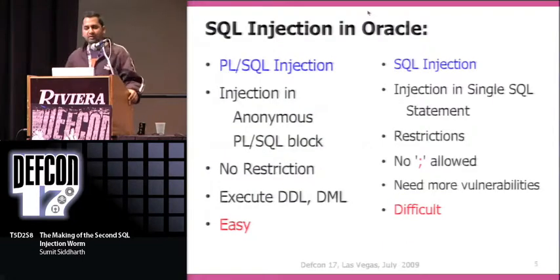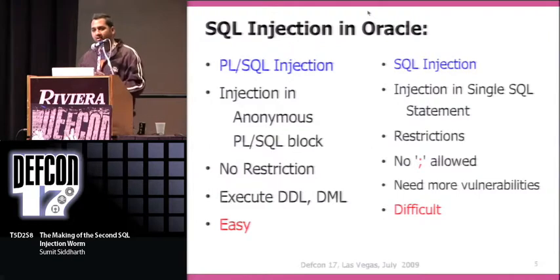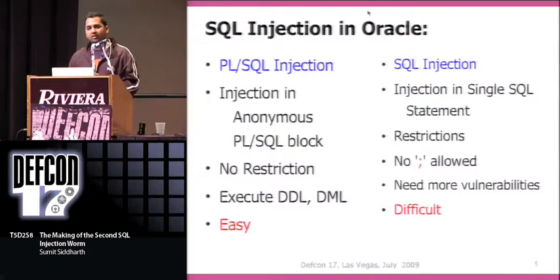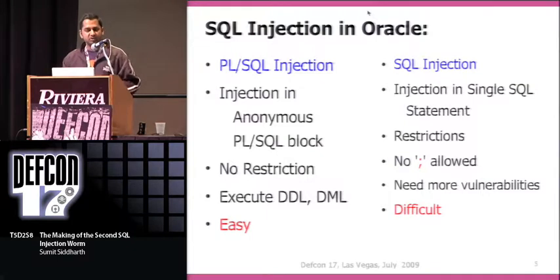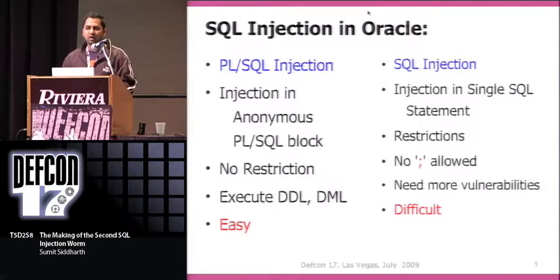When we talk about SQL injection in Oracle, there can be two broad categories depending on where your injection point is. Your injection point could be in an anonymous PL/SQL block, which is typically called a PL/SQL injection, or you can have the injection in a single SQL statement, like a select query. A common example is a where clause in a select query where you have your injection point.